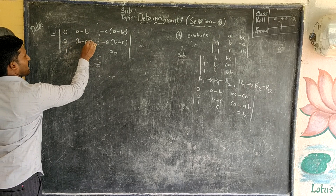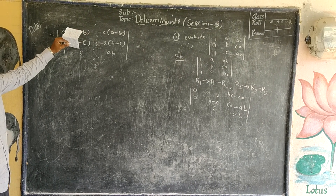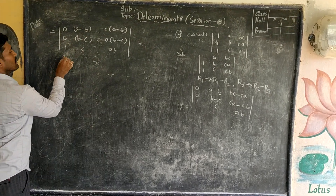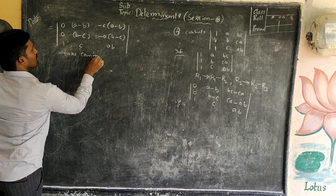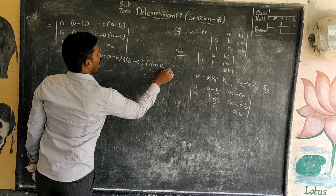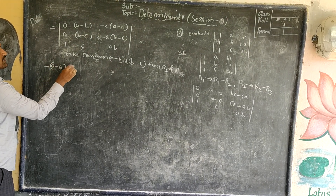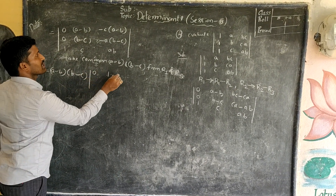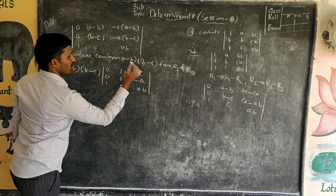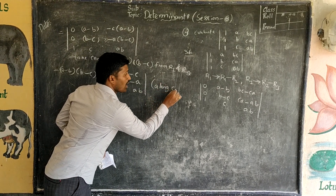Along row 1, the common factor is (A minus B) — even though there's a 0, 0 times (A minus B) is still 0. In row 2, the common factor is (B minus C). Taking (A minus B) from R1 and (B minus C) from R2 as common factors outside the determinant.